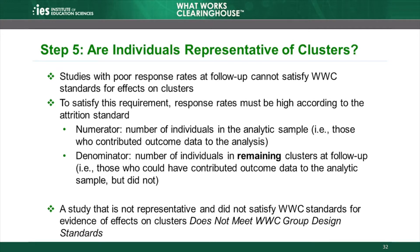Also like Step 3, overall and differential non-response rates are calculated using the number of individuals in the analytic sample as the numerator — those who contributed outcome data to the analysis. However, the denominator can differ from the one used in Step 3. In Step 3, the denominator could change depending on the threat of bias due to joiners. When assessing representativeness in Step 5, the denominator is always the total number of individuals in remaining clusters at follow-up, those who could have contributed outcome data to the analytic sample but did not.